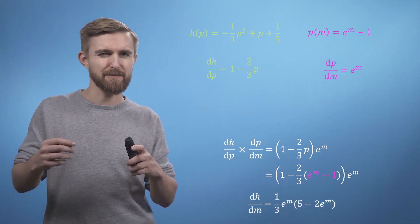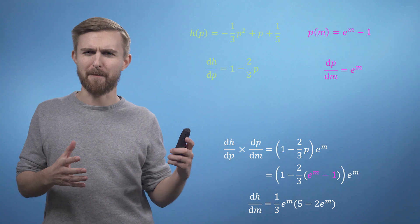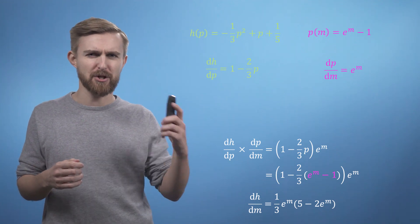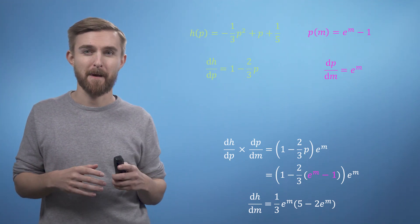So, DH by DM equals 1 third e to the M times 5 minus 2 e to the power of M. And there we have it.